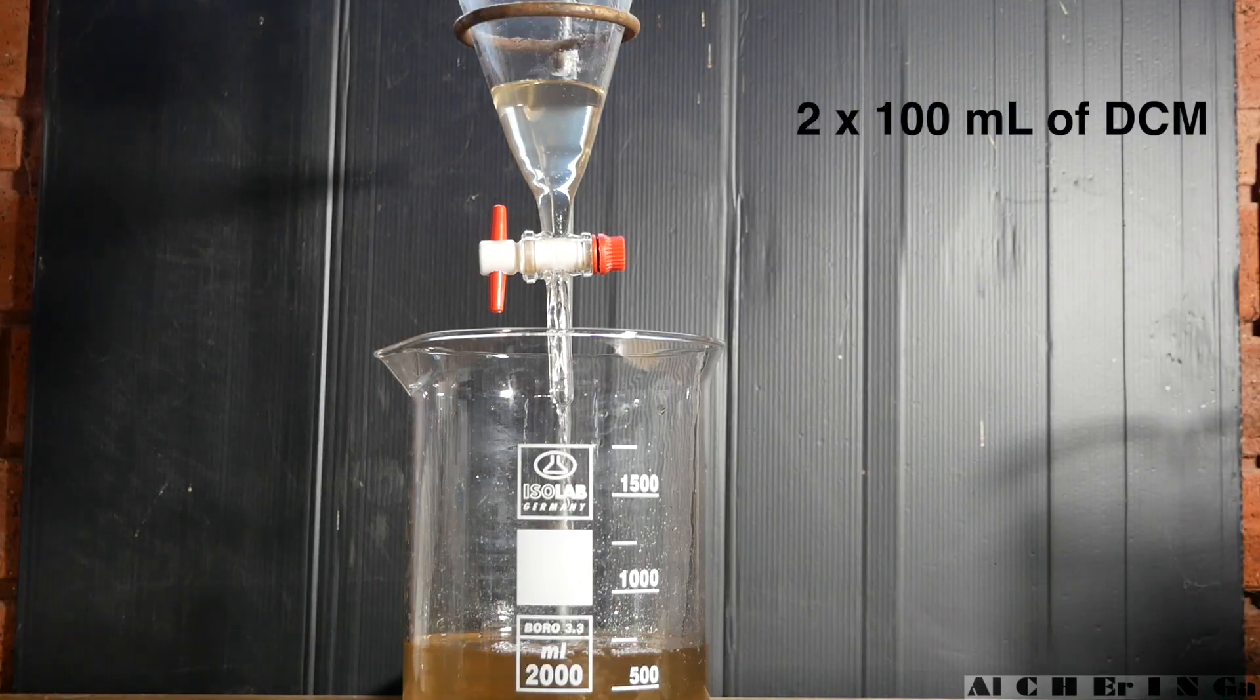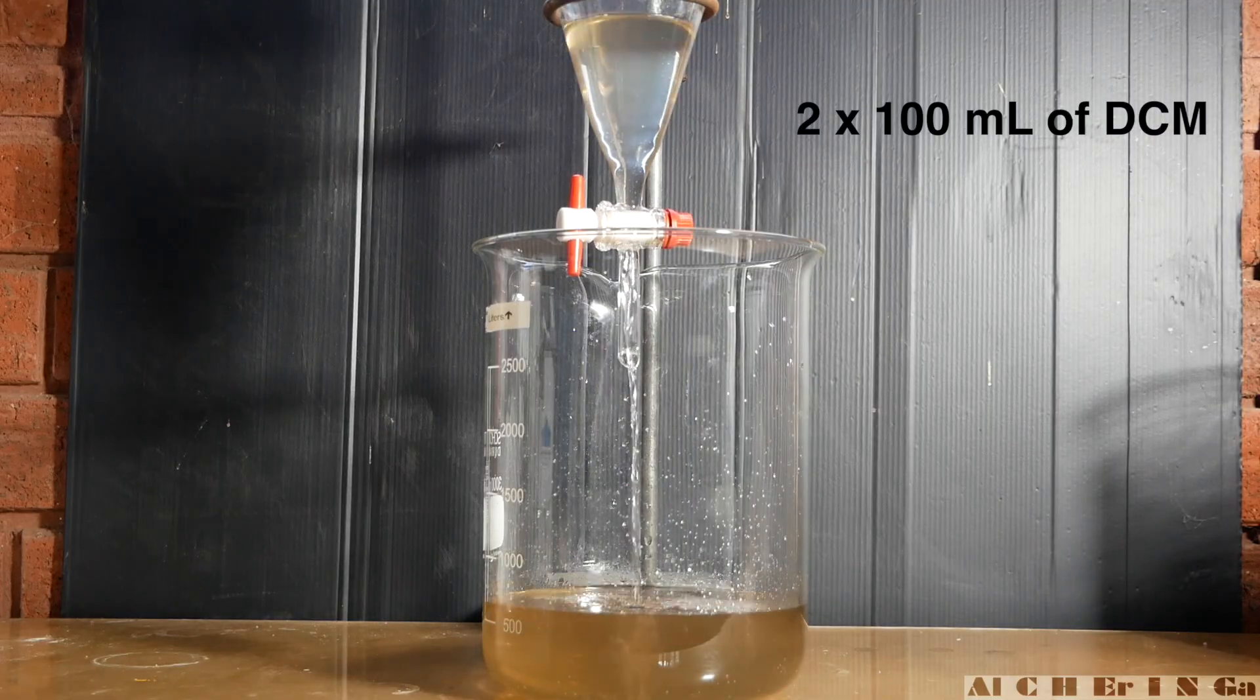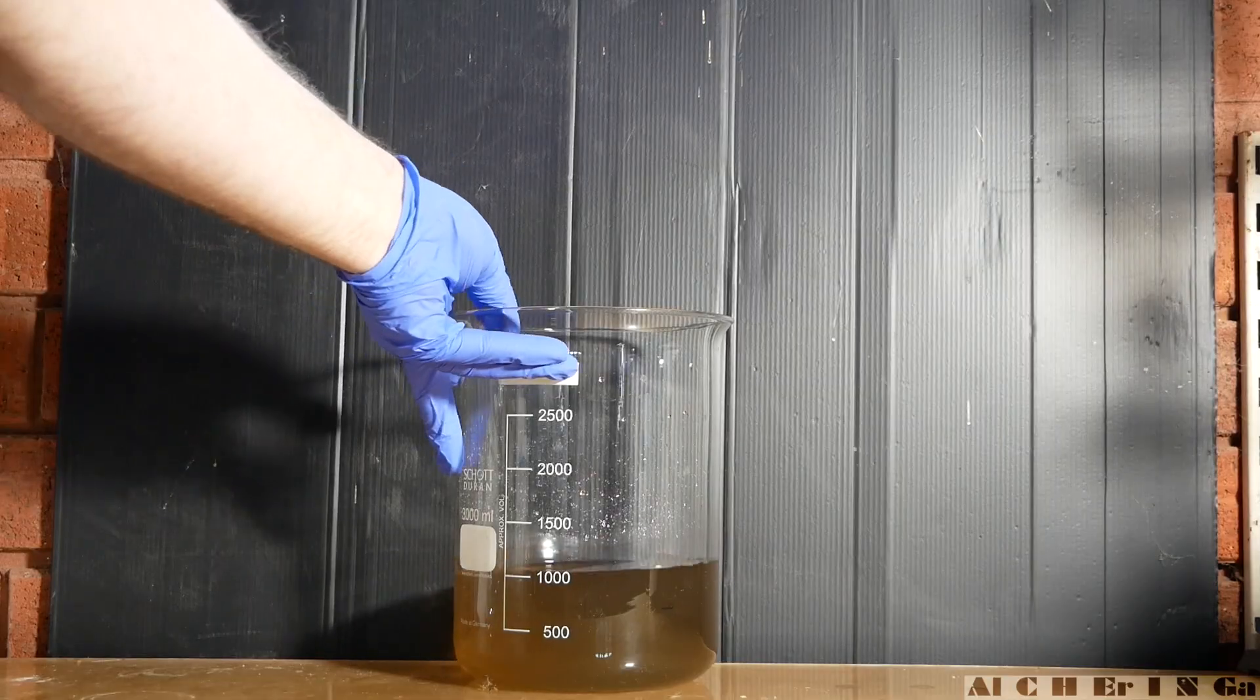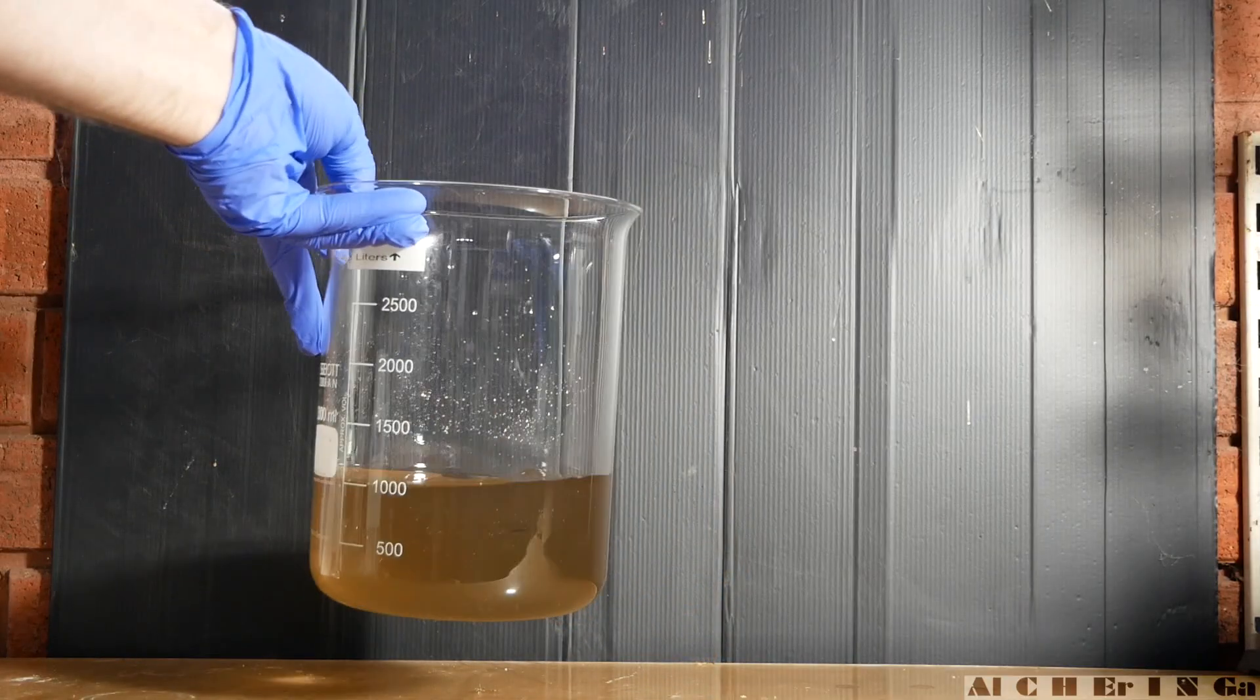Carry out another two more extractions with 100 milliliters of dichloromethane each. This is now a cleaned aqueous solution free from 1-phenyl-2-propanone.